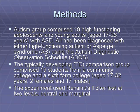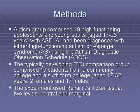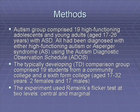The experiment used Renzick's flicker test at two levels: central and marginal. Central would mean that the change occurred in the middle of the page where attention would most likely be placed, and marginal meant it was somewhere outside the center area of the picture.